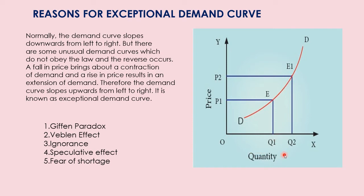Now look at this graph. On the x-axis you have quantity and on the y-axis you have price. When the price is P1, a person is buying Q1 — this is the equilibrium point. Now the price increases from P1 to P2. Even though there is an increase in price, the demand also increases from Q1 to Q2. This is the new point. So this demand curve slopes upwards, confirming the exceptional demand curve.